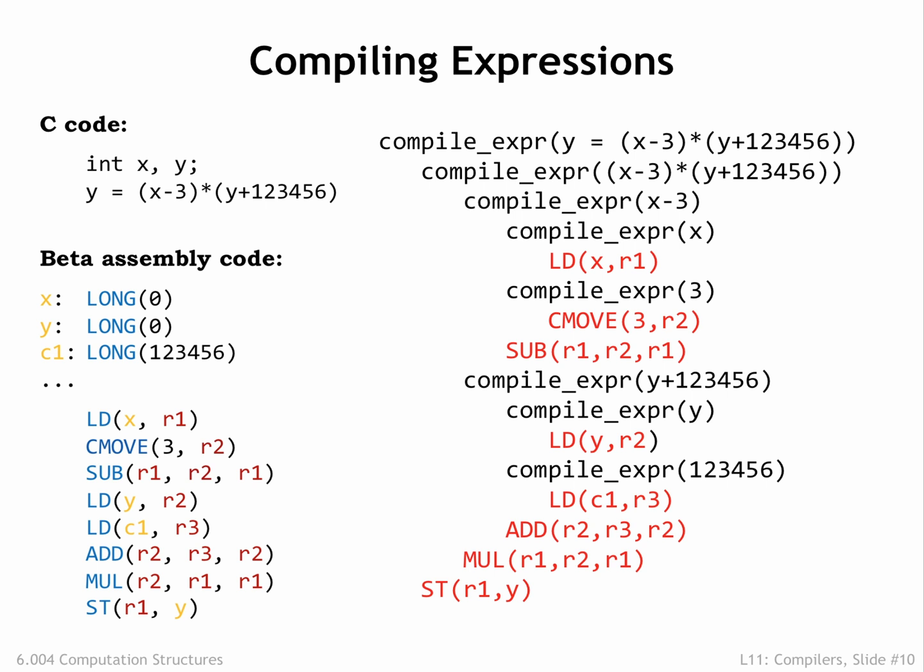The generated code is shown on the left of the slide. The recursive descent technique makes short work of generating code for even the most complicated of expressions. There's even an opportunity to find some simple optimizations by looking at adjacent instructions. For example, a CMOVE followed by an arithmetic operation can often be shortened to a single arithmetic instruction with a constant as its second operand. These local transformations are called peephole optimizations, since we're only considering just one or two instructions at a time.